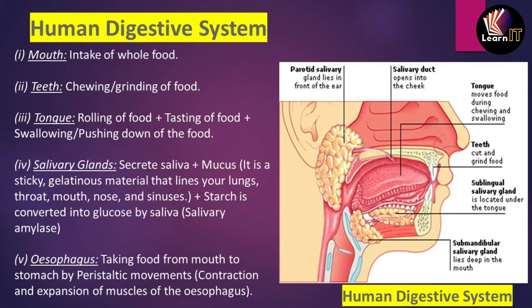Starting from the mouth: the mouth intakes food from the external environment. The teeth perform chewing and grinding — the mastication process. The dental formula for teeth is 2-1-2-3, meaning teeth are divided into four kinds: incisors, canines, premolars, and molars. This formula gives an adult a total of 32 teeth.